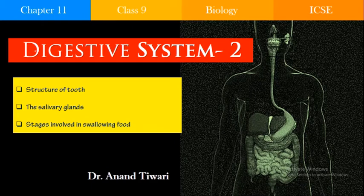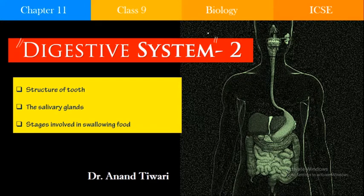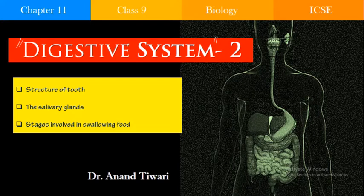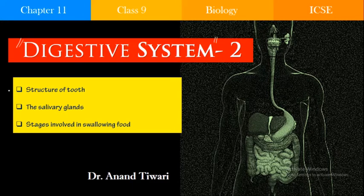Hello students. In the previous video we started the discussion on the digestive system and we particularly discussed about the alimentary tract and the glands involved in digestion — the components of the digestive system. We started off with the mouth and discussed about dentition: the incisors, canines, premolars and molars, and how the set of teeth varies from a child and adolescent to that of an adult. In this video we will be discussing about the structure of the tooth, the salivary glands, and the stages involved in swallowing food.